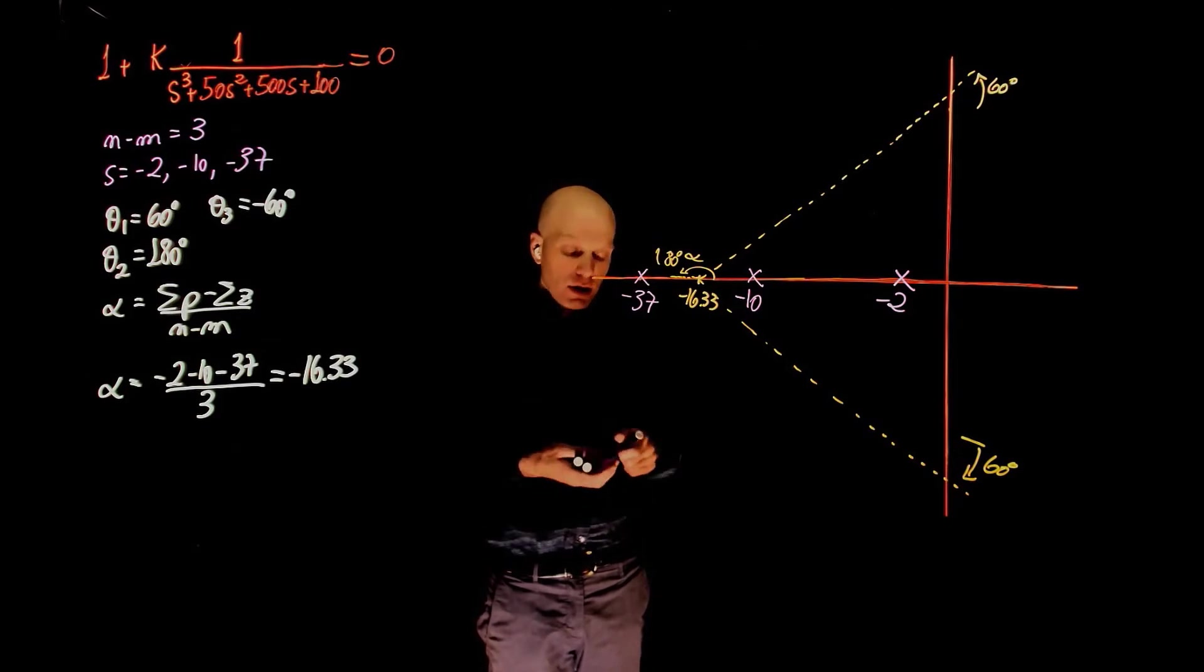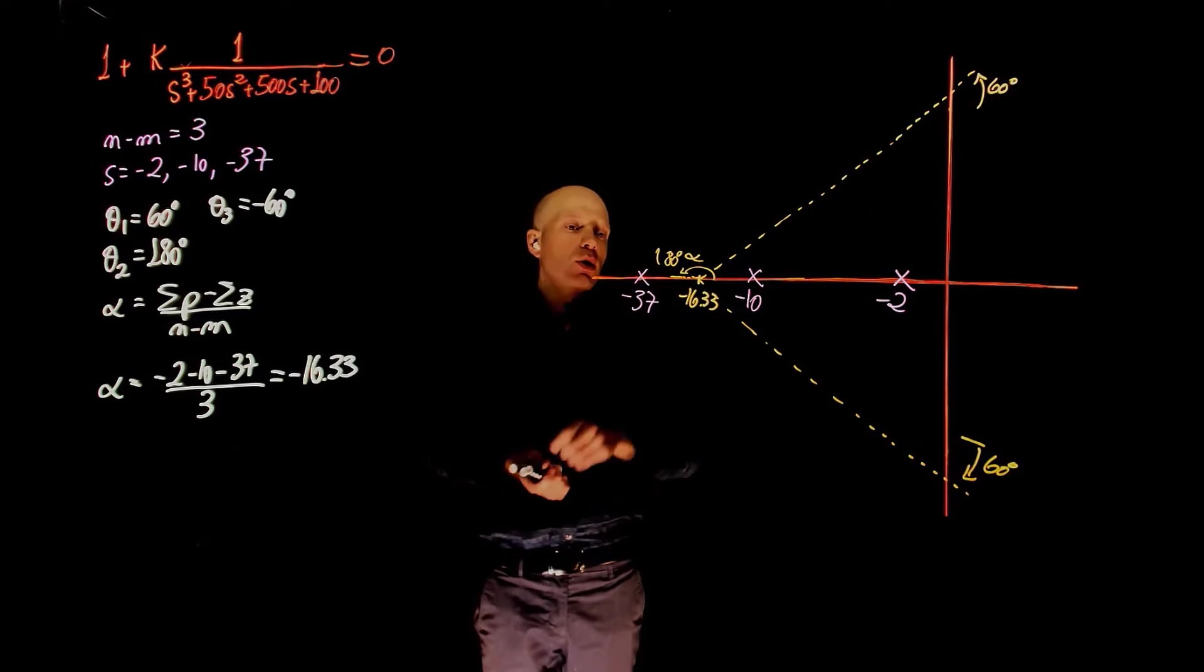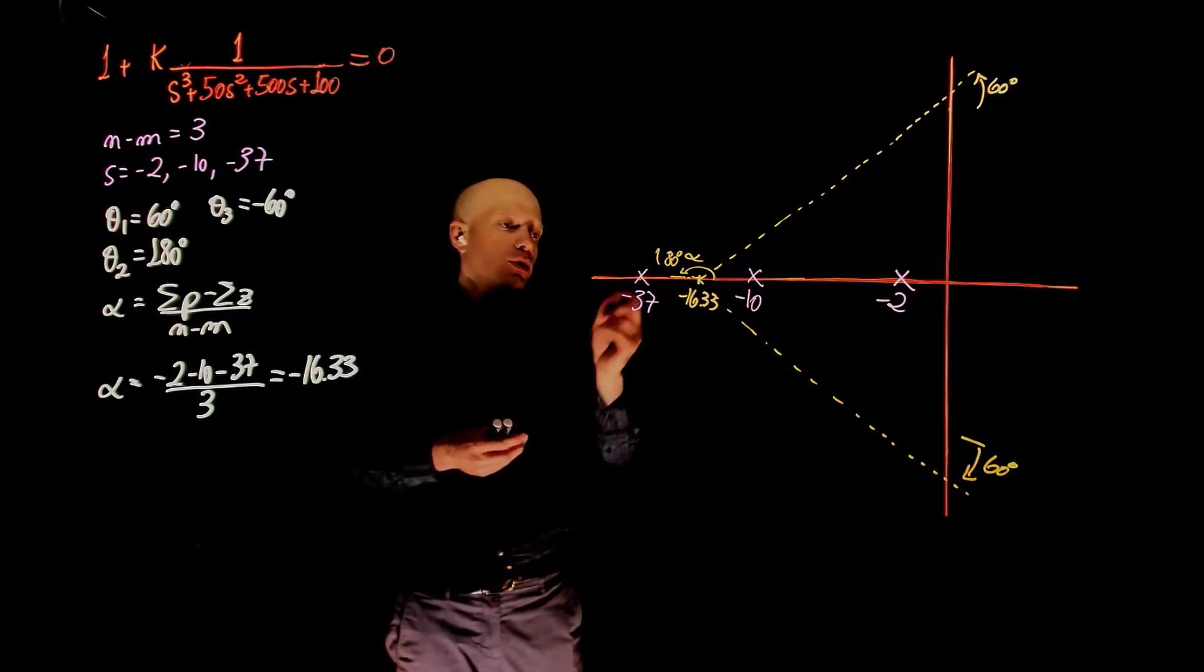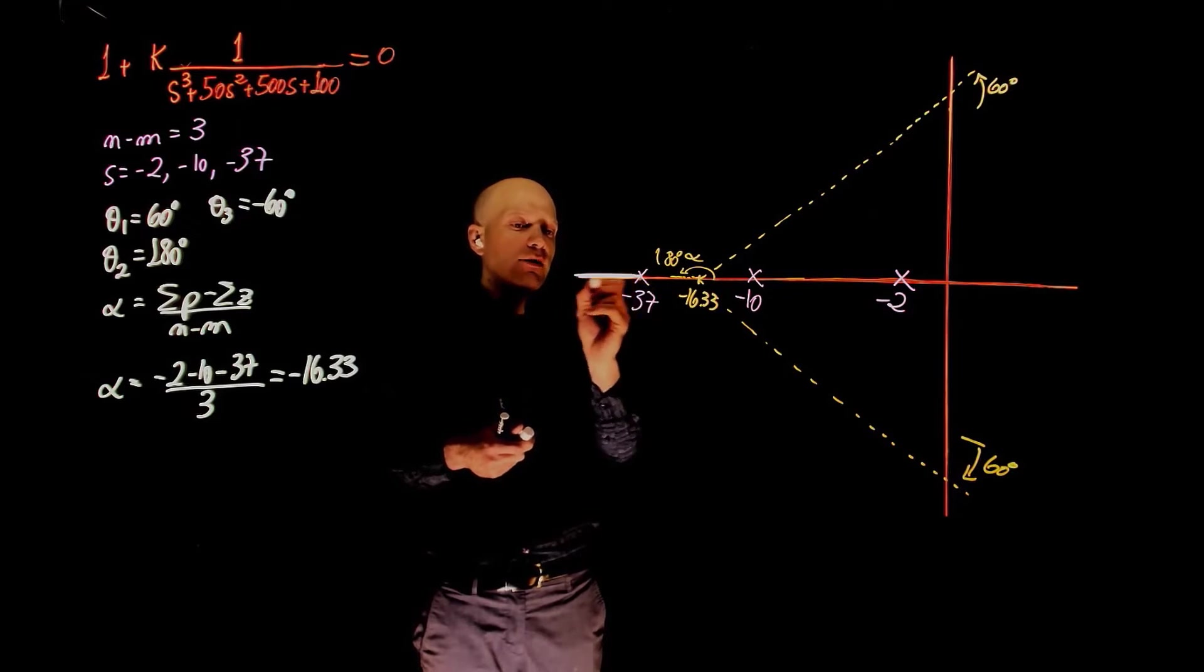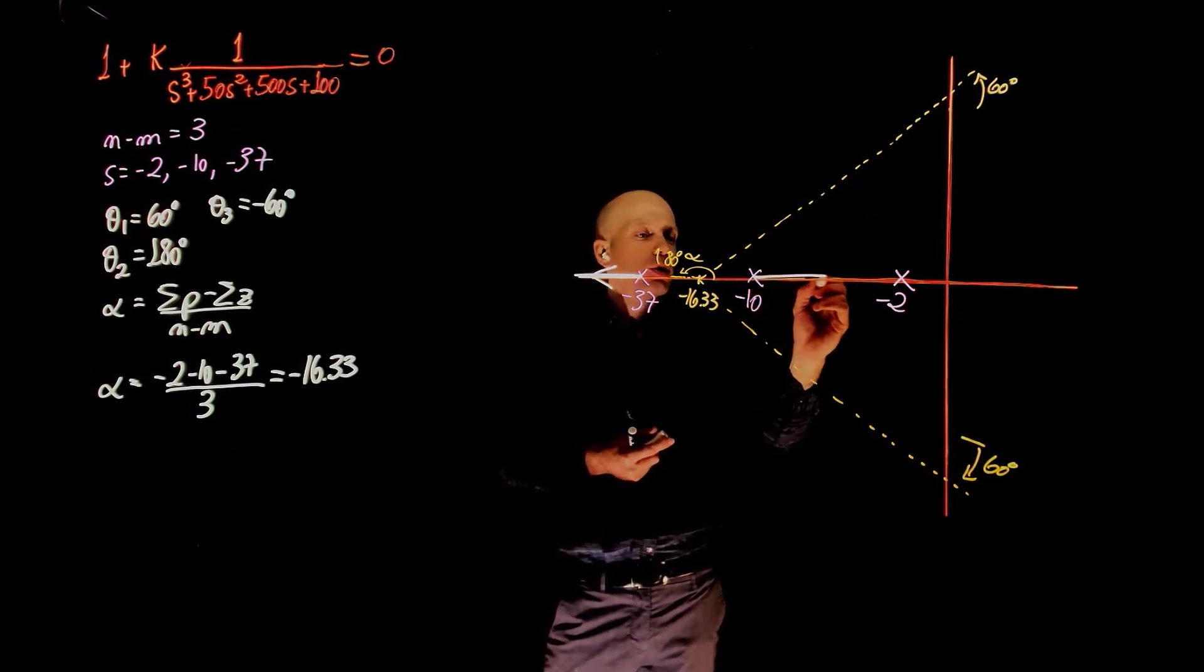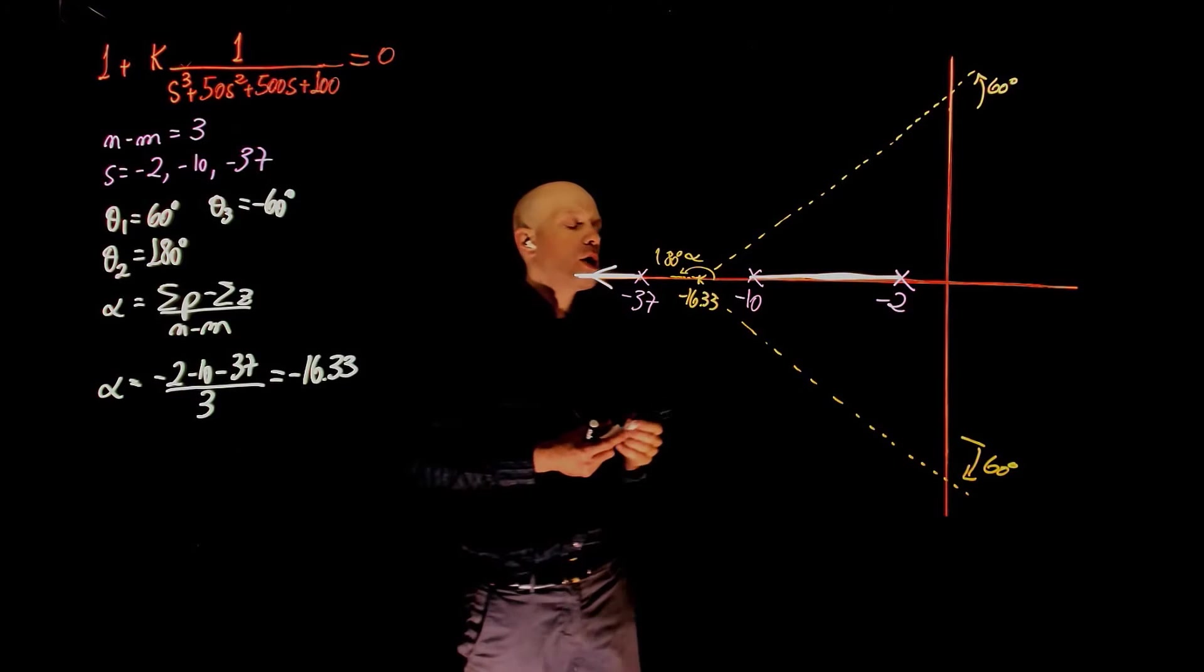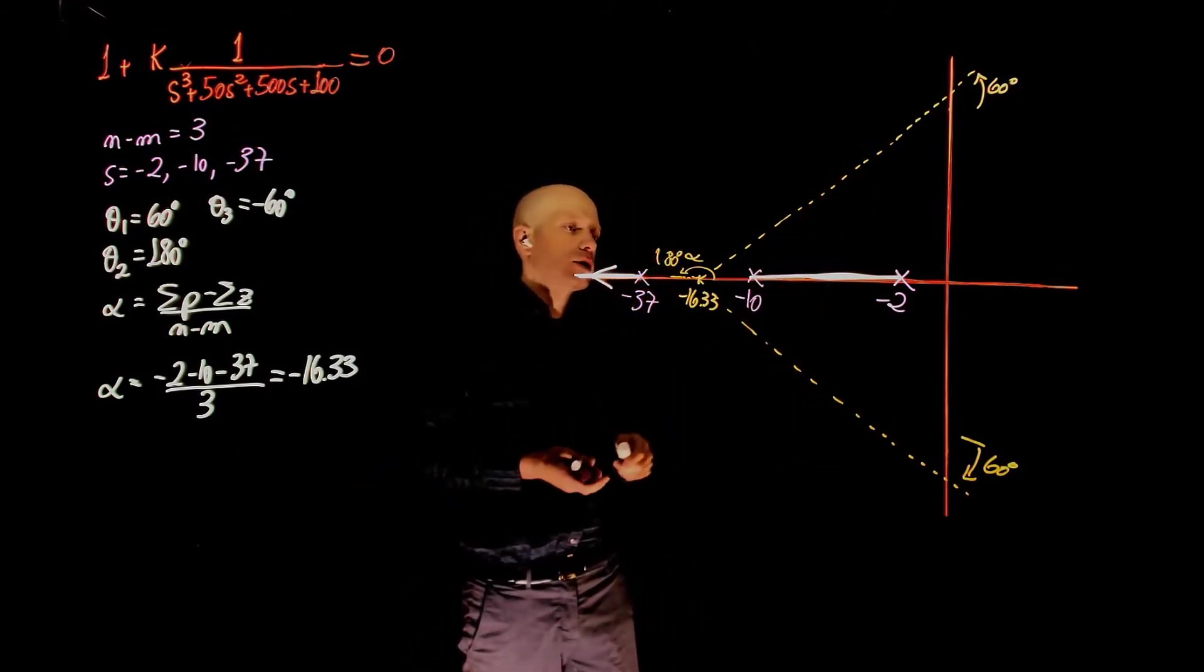Because of that, we can immediately tell that the negative 37 pole needs to go to negative infinity, to use the 180 degree asymptote. There is no other possible solution. So this pole goes to negative infinity. What happens to these two poles? Well, they'll come together, because there is a root locus between them, and then they will break away from the real axis. One goes up, one goes down, and they will use this asymptote.